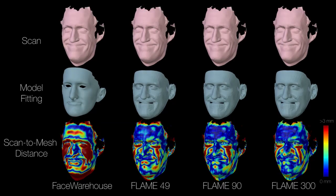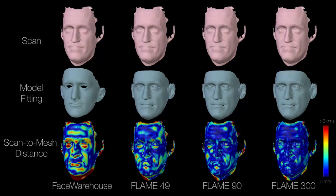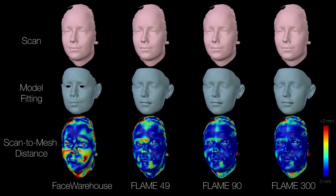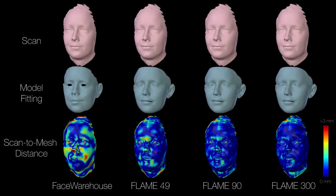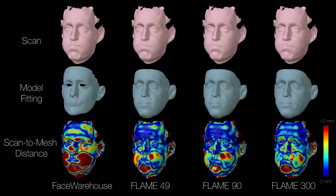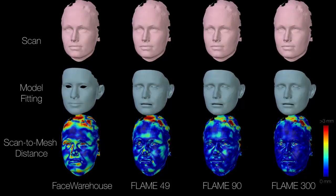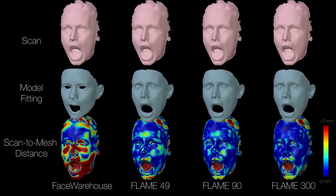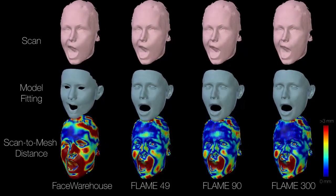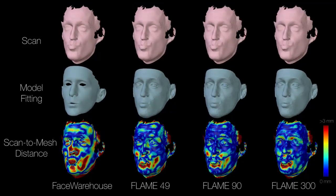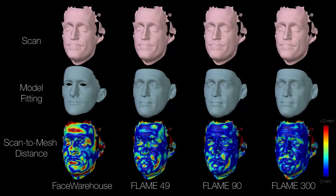We compare FLAME with the commonly used FaceWarehouse model. Here we show the FaceWarehouse model and FLAME fit to a variety of face scans not present in the training set. FLAME uses about 5k vertices whereas FaceWarehouse uses around 12k. With lower resolution, FLAME is able to capture more details and fit 3D scans more precisely. Compared to the Mode-3 Tensor model in FaceWarehouse, FLAME uses simple linear blend shapes and linear blend skinning. This makes FLAME efficient to animate and render, and it is compatible with standard animation pipelines.